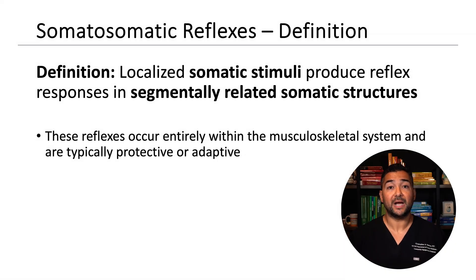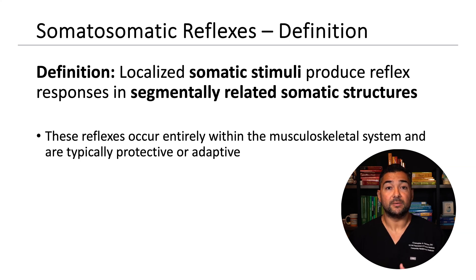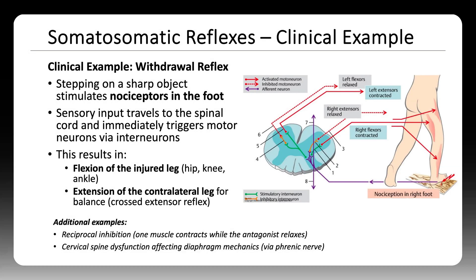Somatosomatic reflexes occur entirely within the musculoskeletal system. A localized somatic stimulus, like muscle strain, can result in a segmentally related somatic response such as muscle spasm or postural compensation. A classic example is the withdrawal reflex: if you step on a sharp object, sensory input from the foot triggers a spinal reflex that flexes the injured leg and extends the opposite leg for balance. Other examples include reciprocal inhibition, where there is reflexive relaxation of the antagonist muscle in response to primary muscle contraction, and reflexive diaphragm mechanics changes due to cervical strain affecting phrenic nerve outflow.